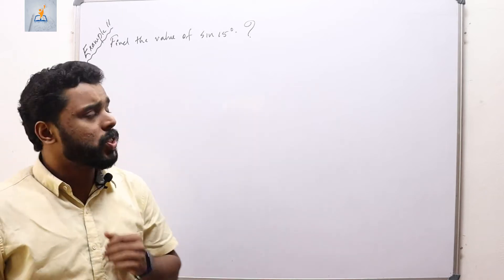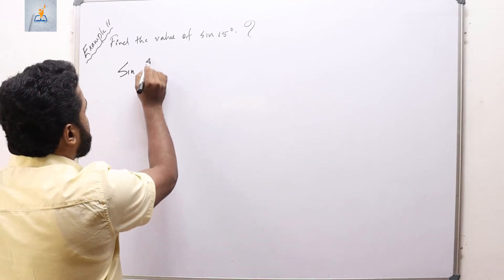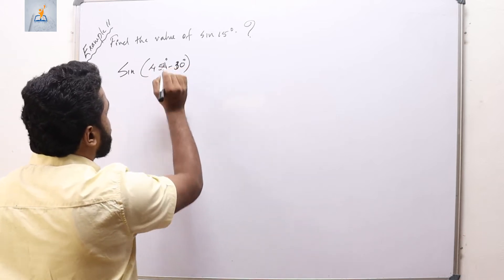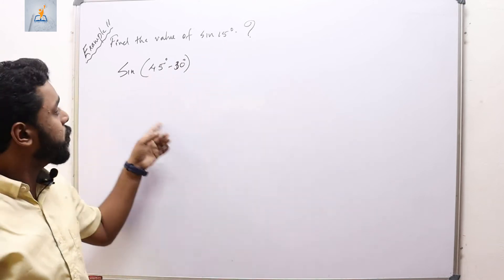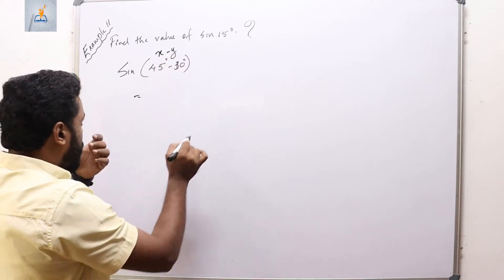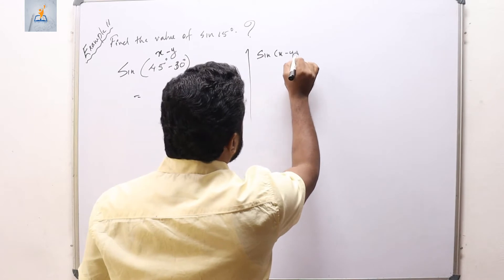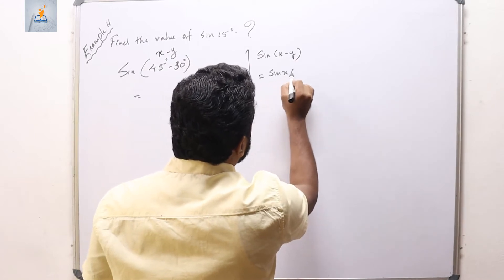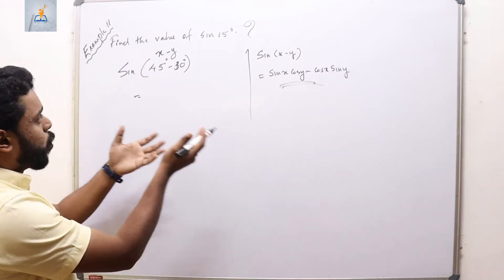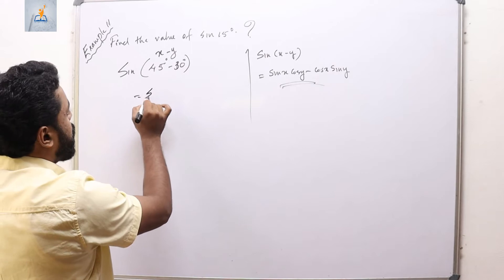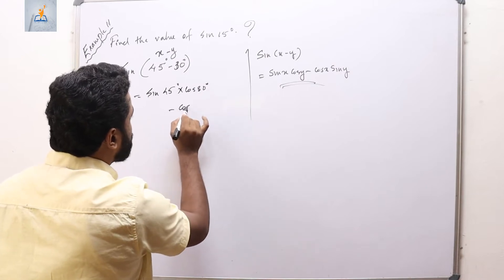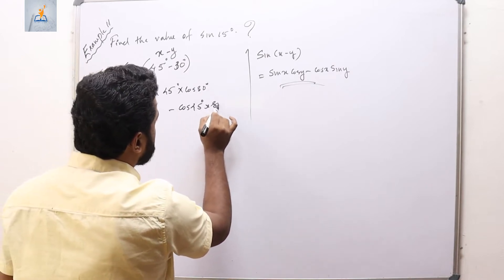15° = 45° − 30°, so sin(15°) = sin(45° − 30°). This is of the form sin(x − y) = sin x·cos y − cos x·sin y. Substituting: sin(45°)·cos(30°) − cos(45°)·sin(30°).